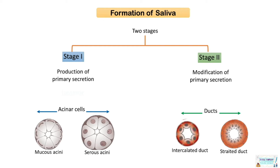We already discussed the mucus and serous acini in the previous presentation and the types of secretions they produce. The primary saliva formed and released from acinar cells is isotonic, and is modified by duct cells to form a hypotonic solution by the removal and addition of specific ions. Ultimately, the saliva that enters the oral cavity is hypotonic.